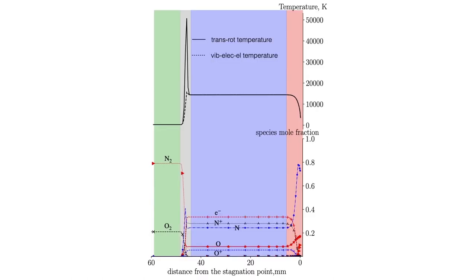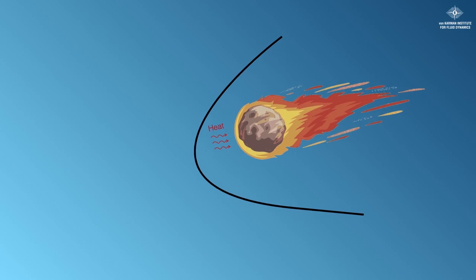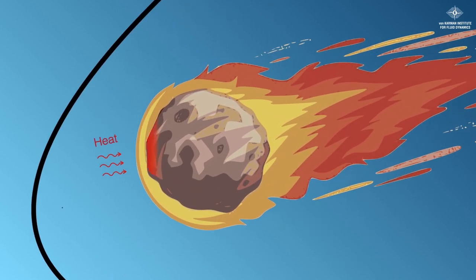In this figure, we observe the temperature and the flow composition for an object flying at 15 km per second. The grey, blue and red areas correspond respectively to the shock, shock layer and boundary layer along the stagnation streamline. We observe a substantial increase of temperature across the shock and strong dissociation and ionization reactions of the chemical species. The surrounding heat is transferred to the meteorite, causing the material to melt and eventually evaporate chemical species such as sodium, magnesium and iron.